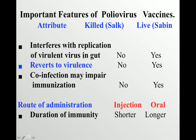Interference with replication of the virulent virus in the gut is seen again with the live vaccine. Reversion to virulence is a risk only with the live Sabin vaccine, which can cause paralytic poliomyelitis. Co-infection in the intestine affects live vaccine function but not the killed vaccine. The killed Salk vaccine is injected, while the live Sabin vaccine is given orally. The duration of immunity with the live vaccine is longer, providing both intestinal and humoral immunity, whereas Salk gives only humoral immunity.